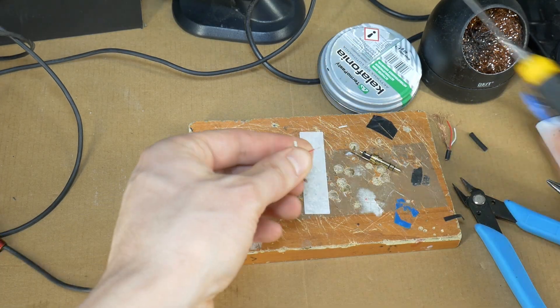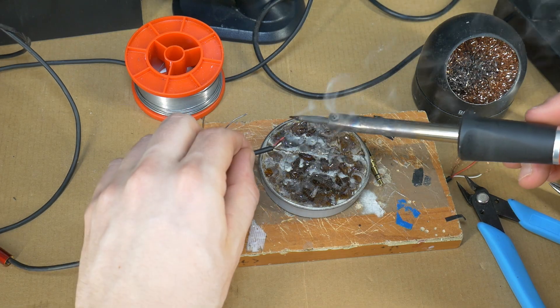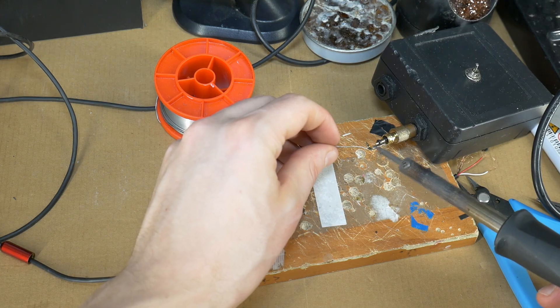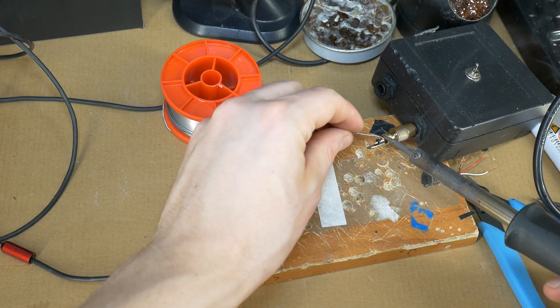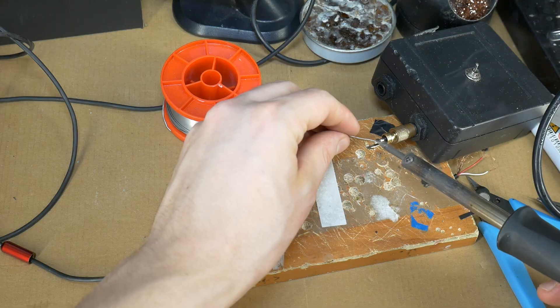Remove the outer jacket from both wires and tin all three wires. Also, tin the contacts on the jack. This will improve soldering quality.